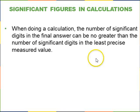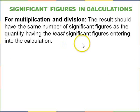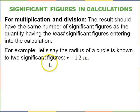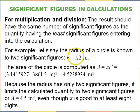When doing a calculation, the number of significant digits in the final answer should be no greater than the number of significant digits in the least precise measured value. There are two different rules: one for multiplication and division, and another for addition and subtraction. For multiplication and division, the result should have the same number of significant figures as the quantity having the least number of significant figures used in the calculation. For example, if the radius of a circle is known to two significant figures, 1.2 meters, and you want to find the area, pi you know to many significant figures. You can multiply this out and get 4.5238934 on your calculator. But that's listing too many significant figures because you started with 1.2. So you should end with just 4.5 meters squared.